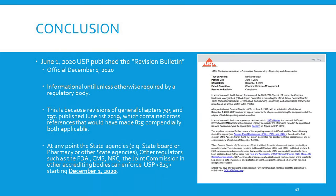Conclusion: June 1, 2020, the USP published the Revision Bulletin. Official December 1, 2020 — informational until unless otherwise required by regulatory bodies. This is because the revision of General Chapters 795 and 797, published June 1, 2019, contains cross-references that would have made 825 compendial and applicable.